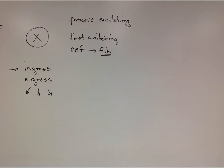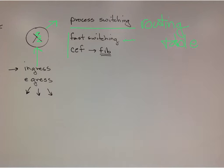We talked about ingress and egress — ingress coming into the router, egress coming out of the router. The router selects the best path using process switching, which is what we most often think about — looking at the routing table. But there are faster ways: fast switching creates a cache to track what's coming in and out, and Cisco Express Forwarding uses a database for very efficient forwarding. For now, students just need to understand process switching and not worry about the other two.